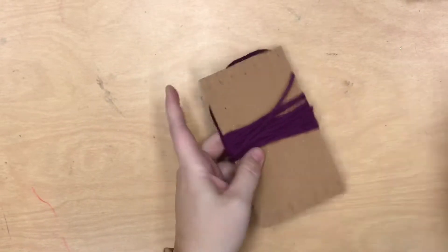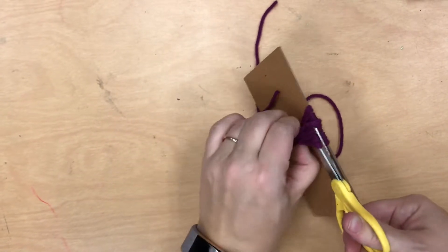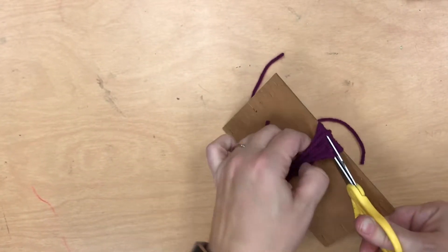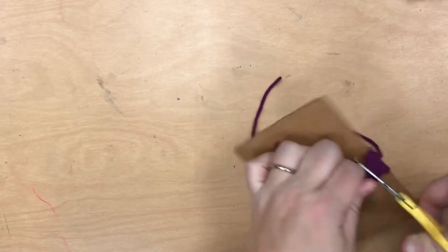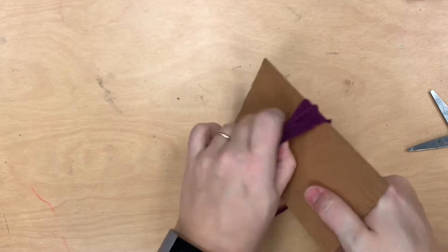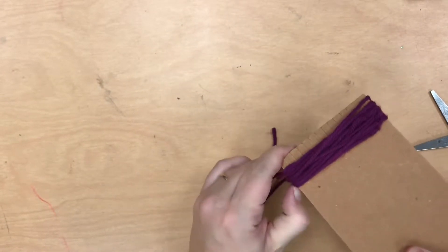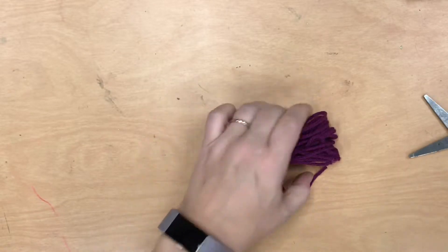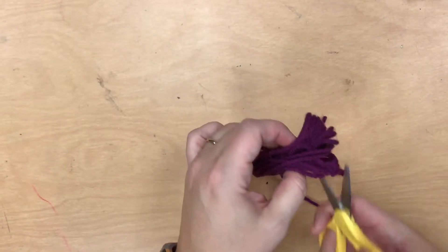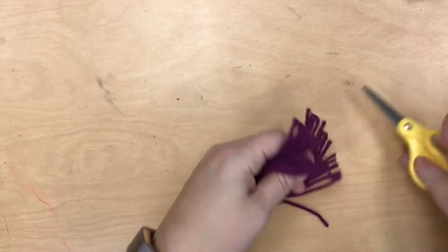So now we have to get this thing off of the loom. At first I tried hacking at it with scissors and that was not very effective. So instead I stopped and started to scoot this newly formed tassel off of the loom, and then once I got it off I could use the scissors to pull the end and snip through.